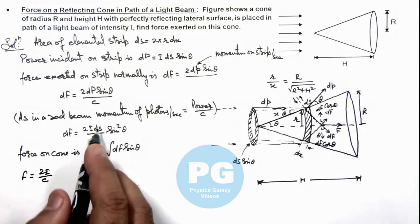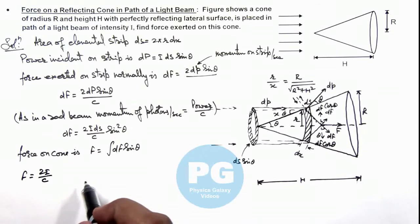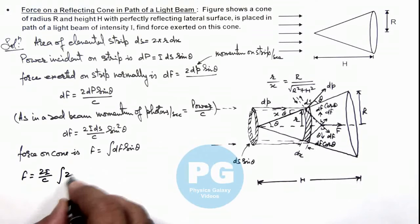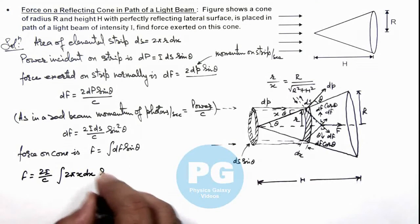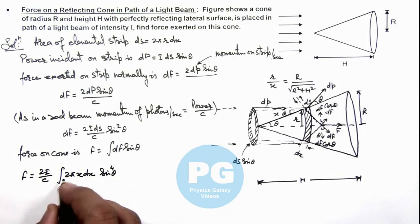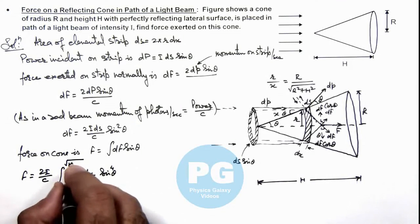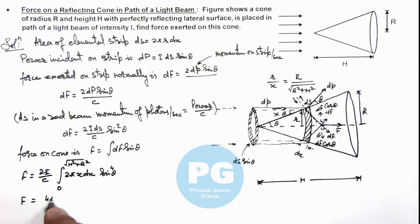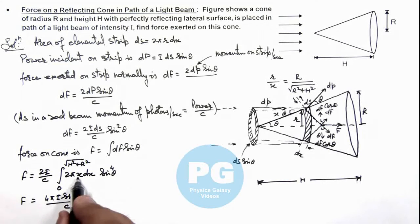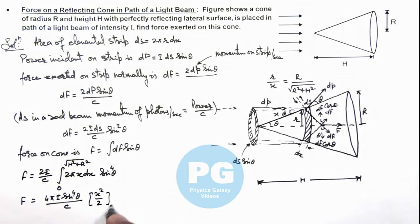Substituting dS from the earlier expression, this becomes the integration of 2π·x·dx multiplied by sin⁴θ, integrating x from zero to √(h² + R²). Integrating, the value of force we are getting is 4π·I·sin⁴θ / c, and x integration gives x²/2, putting limits from zero to √(h² + R²).